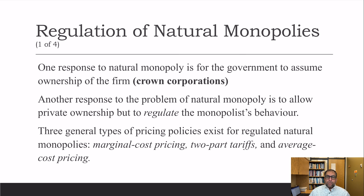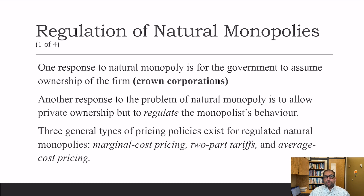If we are adopting private ownership of natural monopolies but want to regulate their prices, there are three ways. One is marginal cost pricing, where we allow them to charge a price equal to marginal cost. The second is two-part tariff pricing, dividing the bill into two parts. The third is average cost pricing. These are the three models available for running natural monopolies in the private sector.